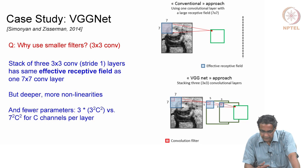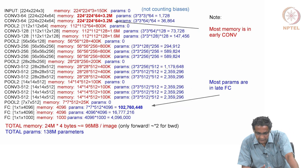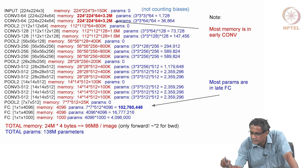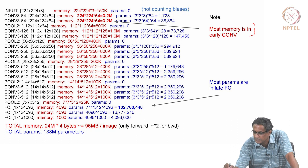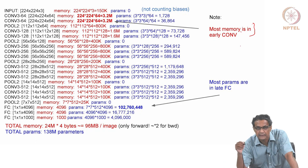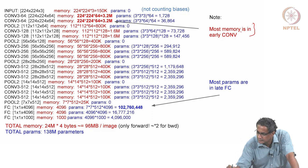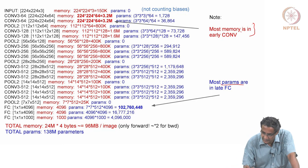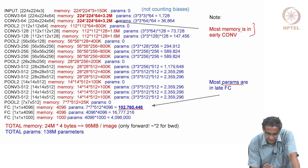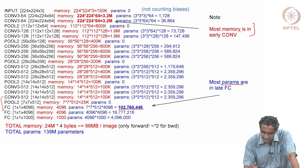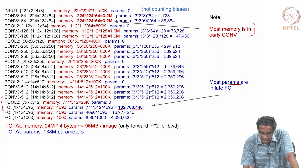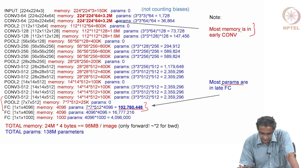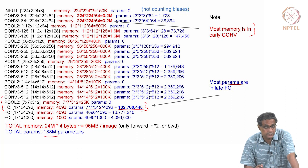To summarize: VGGNet has fewer parameters in some places due to using small 3×3 filters, giving more non-linearities and deeper networks. However, most of the memory is in the early conv layers in terms of neuron count, while most of the parameter count — around 102 million out of 122 million — comes from the fully connected layers. The total parameter count is 138 million.